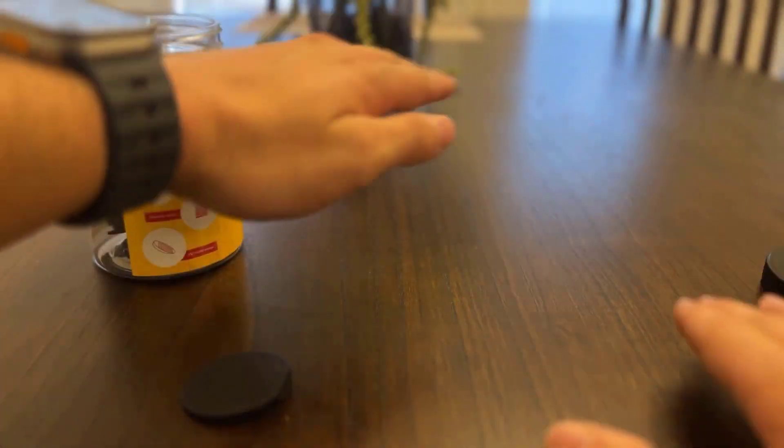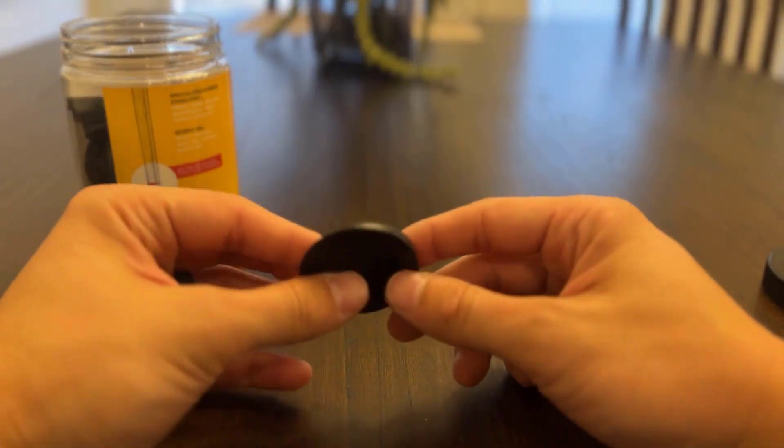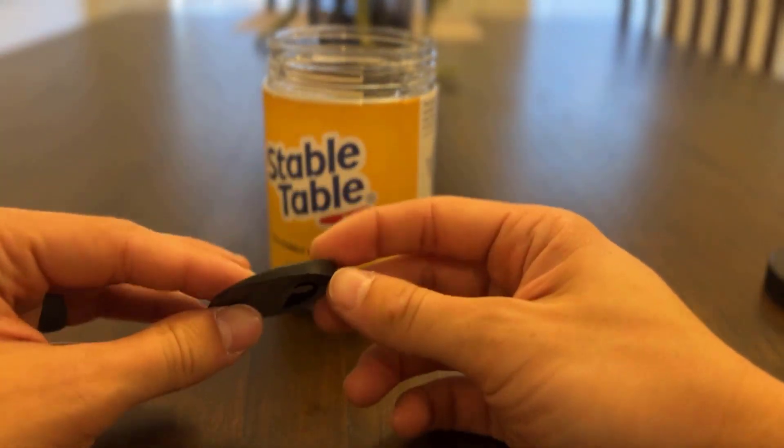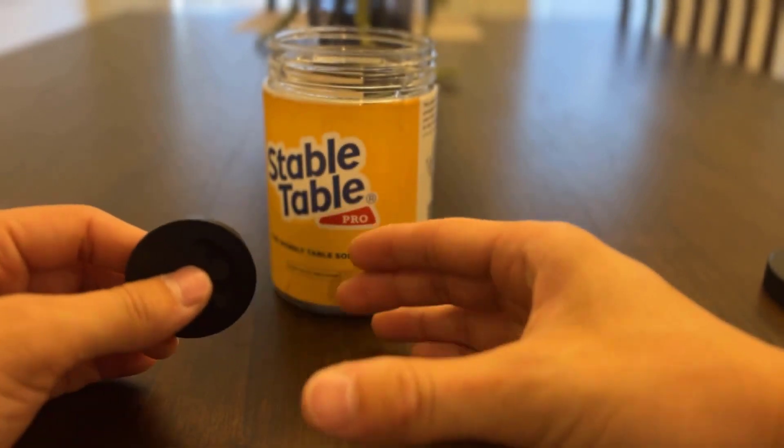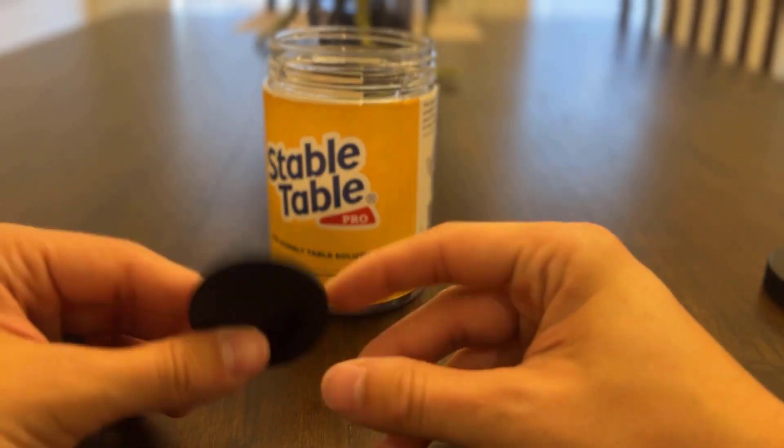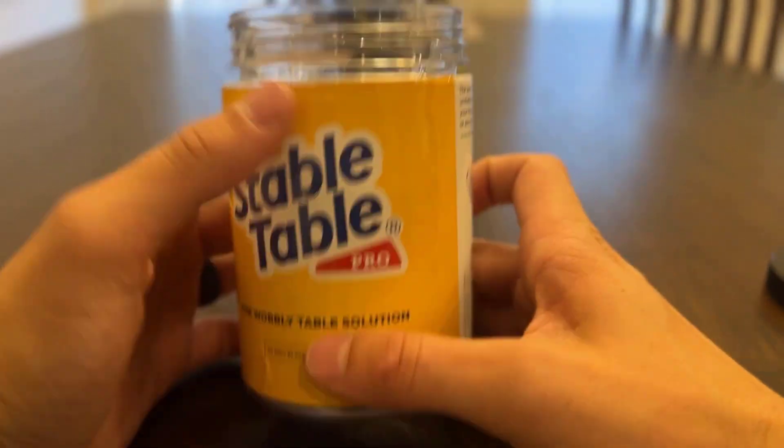But these solved that issue very easily. It took about five minutes. You just push them underneath there, give your table a little wiggle, see if it's still shaking. If it's not, then it pretty much solved your issue. If it is, you can put more underneath there.